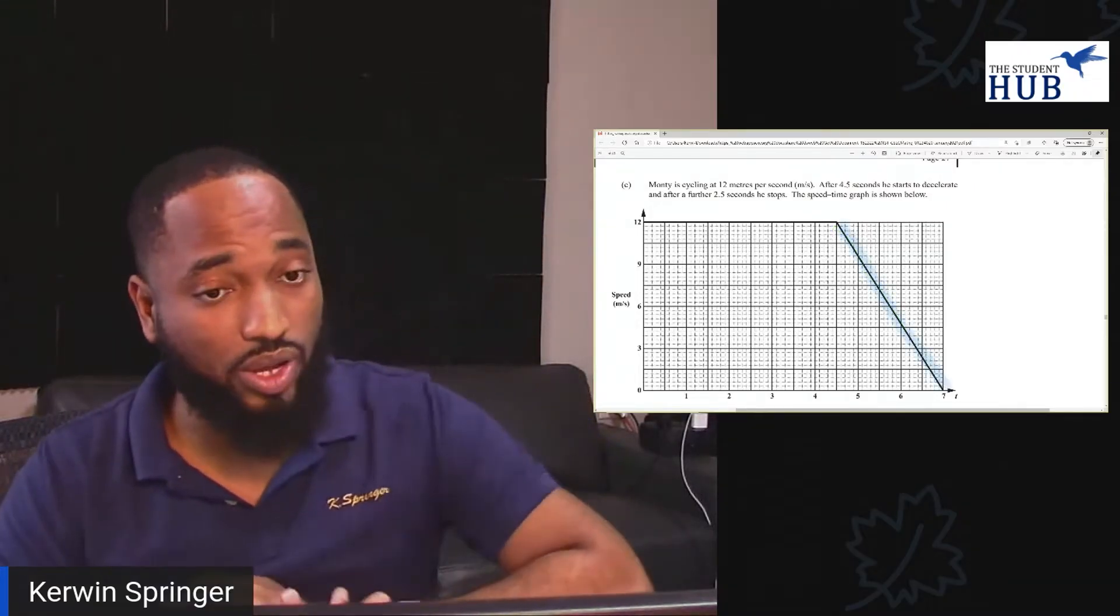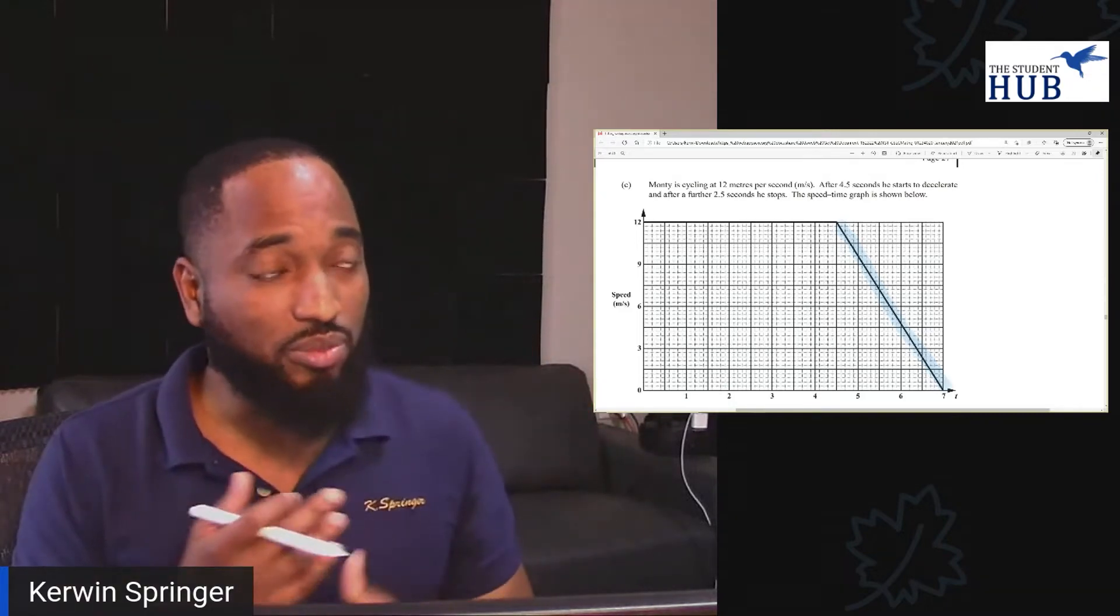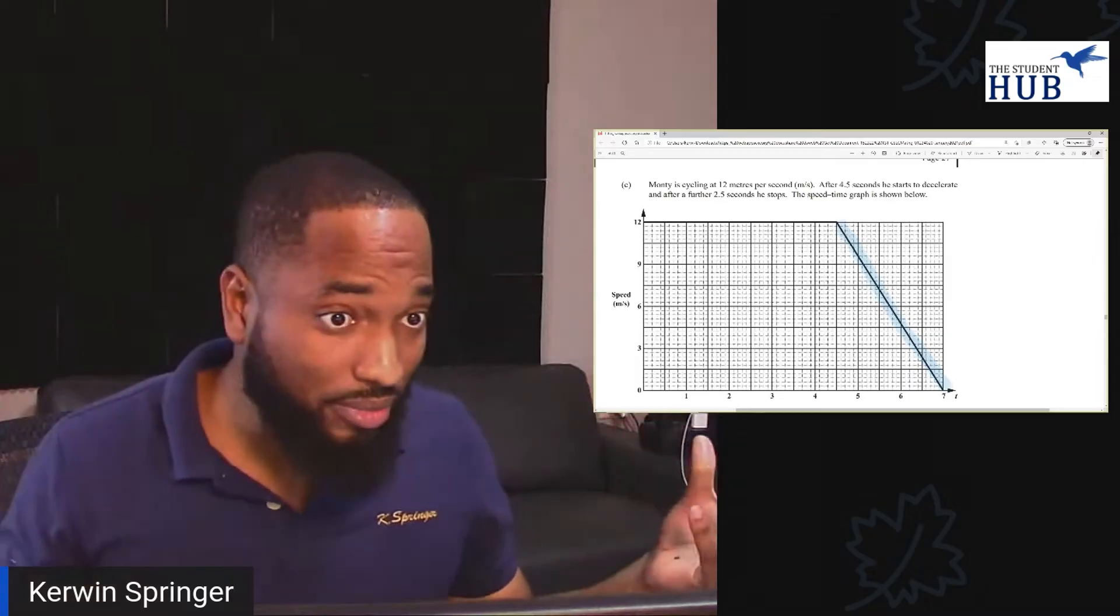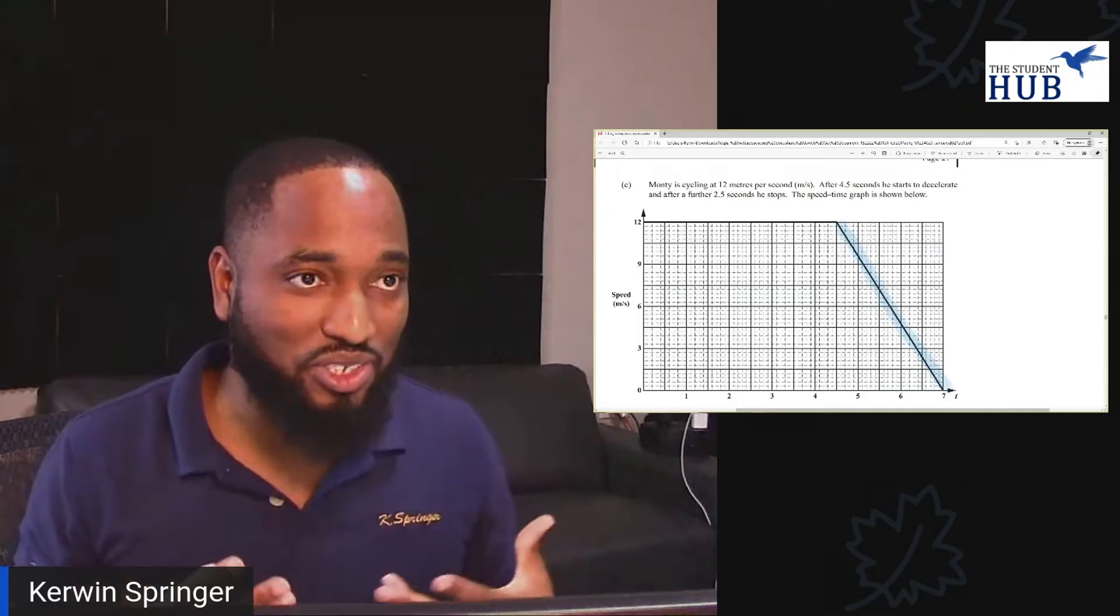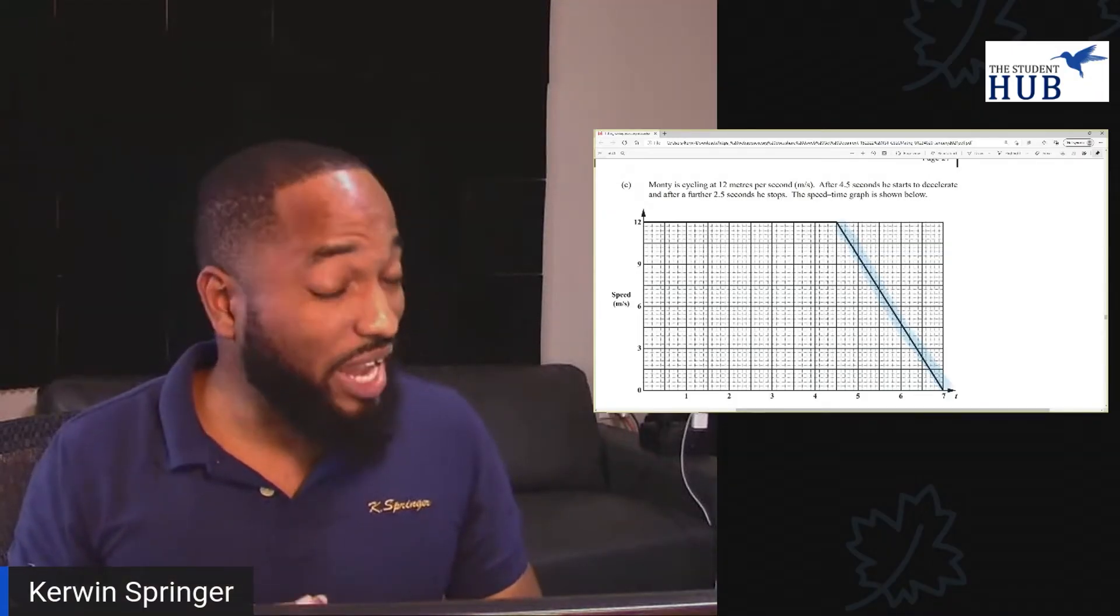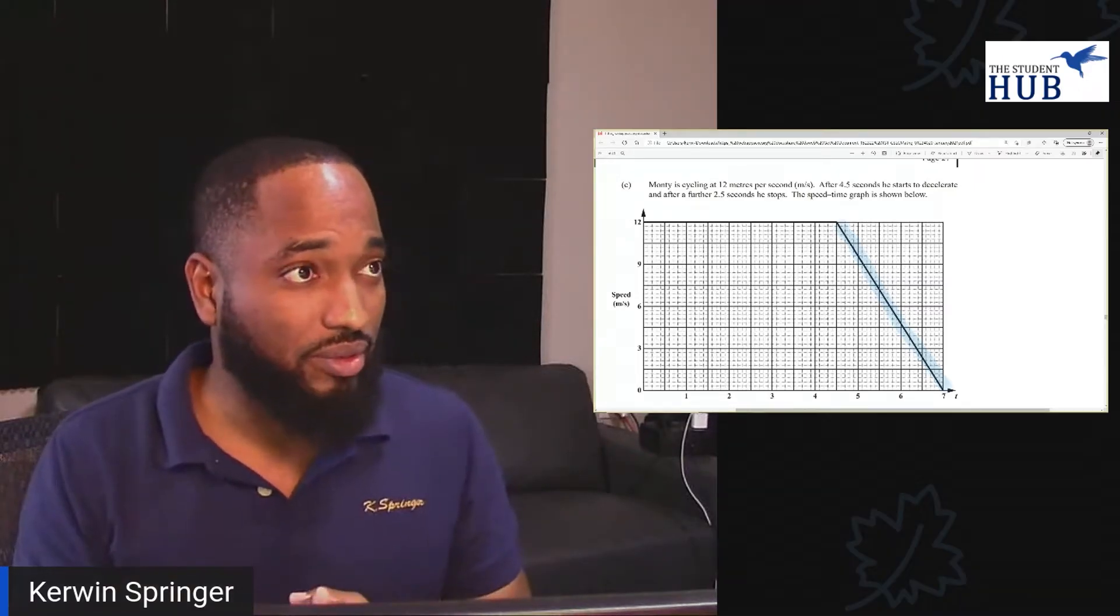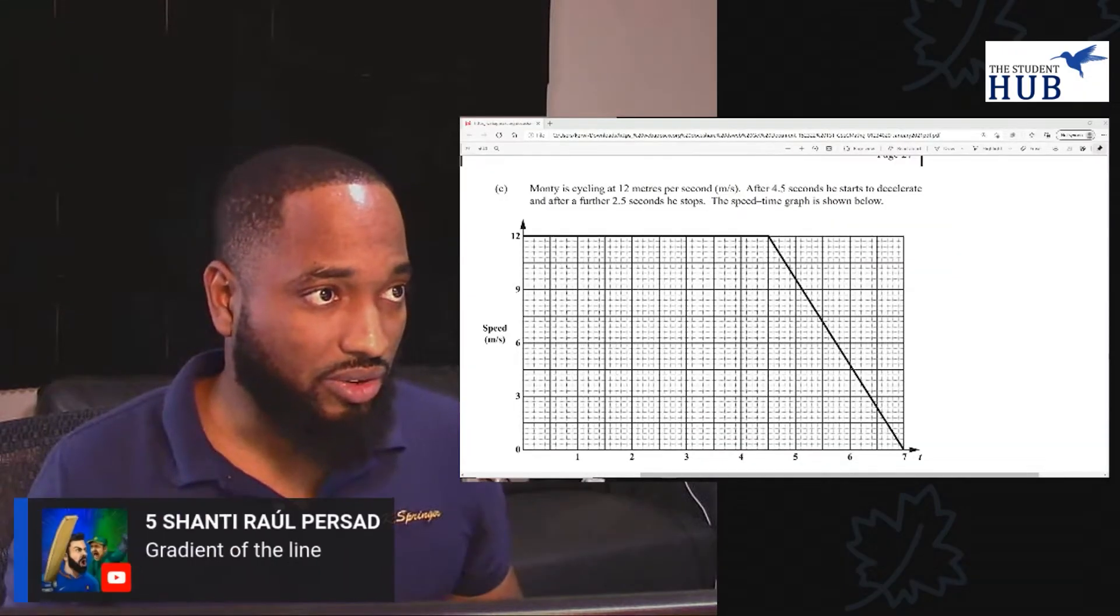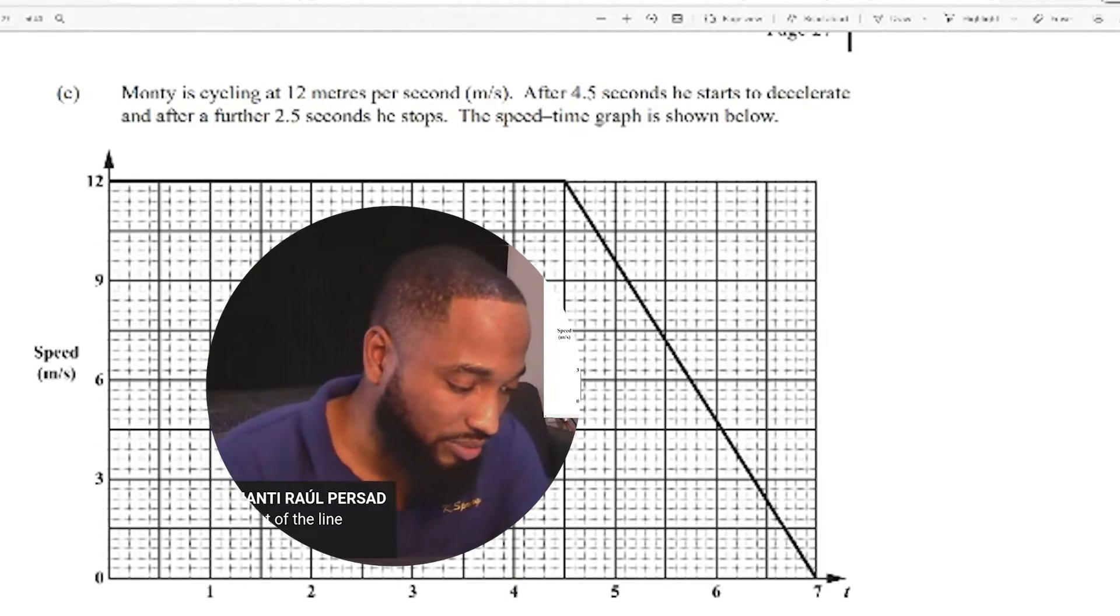He's getting slower. The deceleration is like the opposite of acceleration. But you can see it's a form of acceleration. It's just acceleration with a negative value on it. It's acceleration in the opposite direction. So how do we find acceleration, deceleration on a speed time graph? Anyone in the chat can tell me. And Raul is saying it's the gradient of the line. And that's correct. We use the gradient of the line.